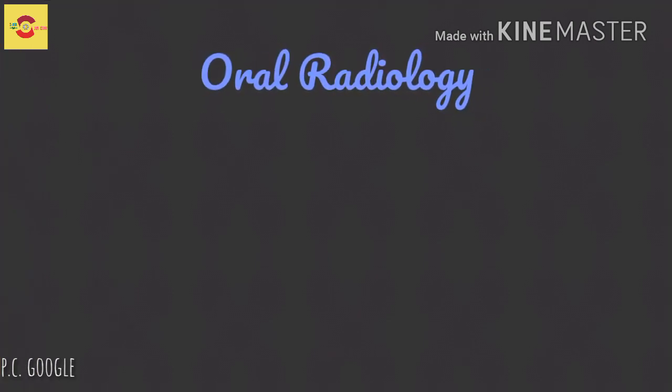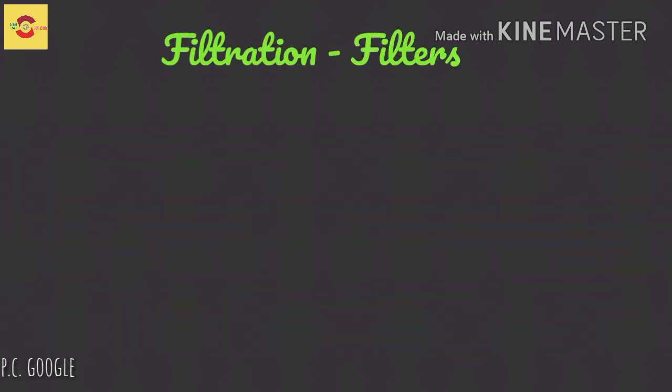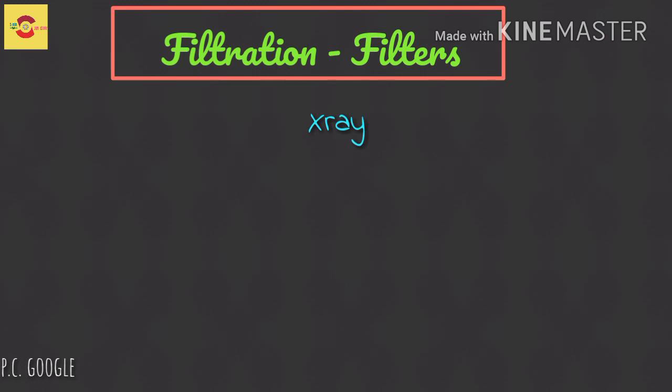Today let us see three terms related to radiology: filters, collimators, and grids. Let us see how and why they are used. First, what is filtration? An x-ray beam consists of a continuous spectrum of photons.